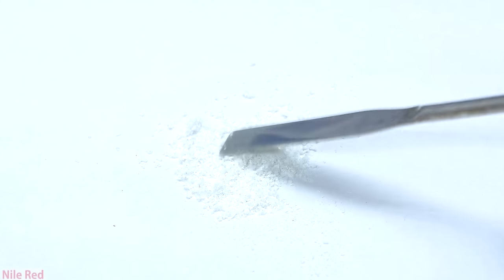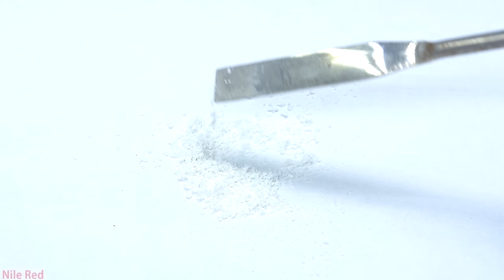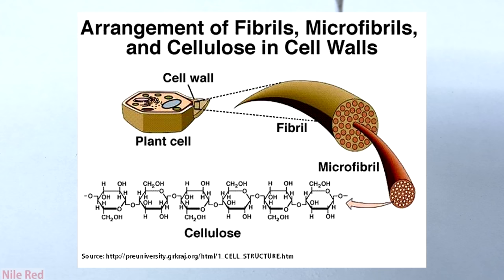Cellulose is the world's most abundant organic polymer and is the main structural component of most plant cells. It's used to make a lot of things we use daily, like clothing, paper, and even cellophane wrap.